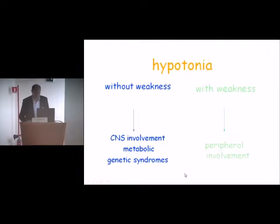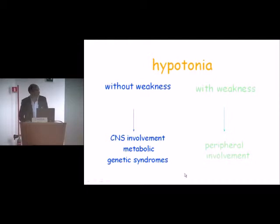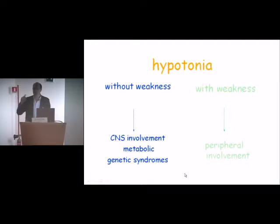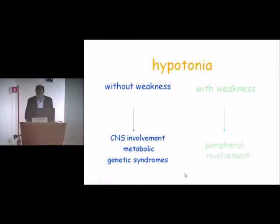The assumption is: if you have hypotonia with weakness, it's very likely you are going to have a neuromuscular problem. But if the hypotonia is without weakness — irrespective of the quality or quantity of movements — if the child is able to move even once, there is no weakness, and then it's more likely you are dealing with central nervous system involvement or metabolic or genetic syndromes.